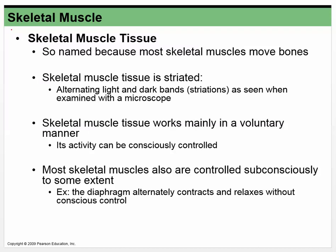Now we're going to talk about skeletal muscle. Skeletal muscle is named that because it moves bones — that tends to be what it does. You also have the diaphragm, which increases the size of the chest cavity to allow the lungs to take in air — not necessarily moving bones, but for the most part it's moving bones, so we call it skeletal muscle. It's striated, and we're going to get into more about what those striations are.